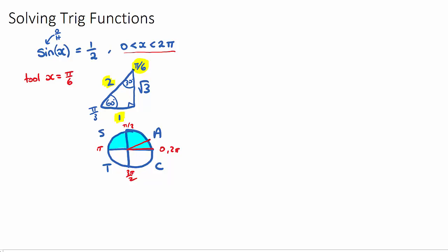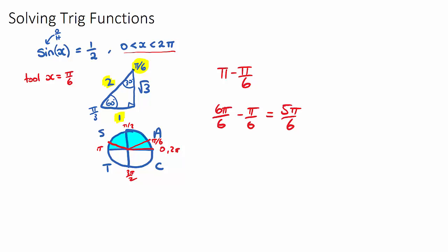If we start at 0 and go up, and if we go all the way over to pi and go up, these two red lines will be our two solutions for x. This angle is simply 0 plus pi on 6, which will be pi on 6, and this one is pi minus pi on 6. Using a common denominator: 6 pi on 6 minus pi on 6, which is 5 pi on 6. So therefore x will be equal to pi on 6 and 5 pi on 6.